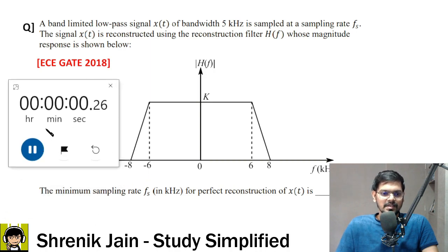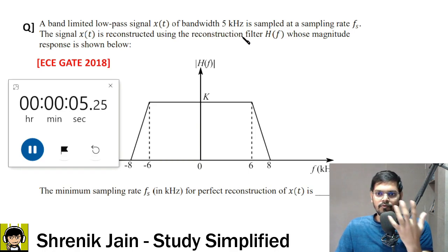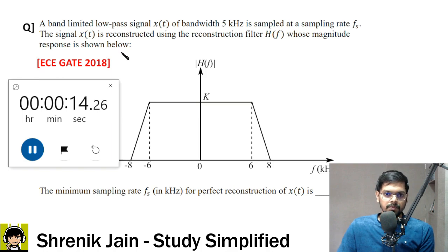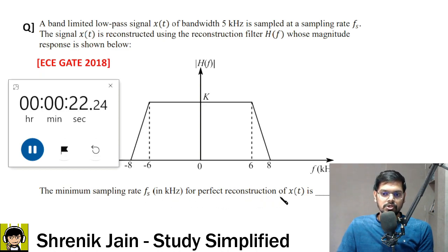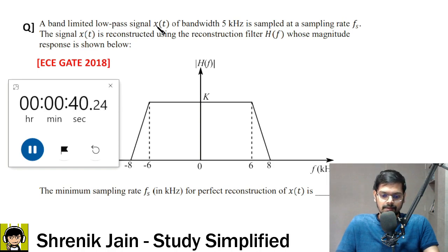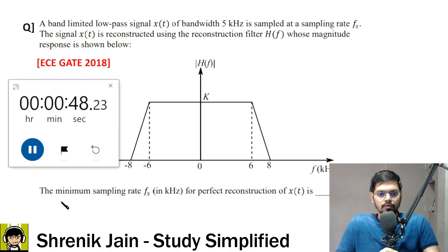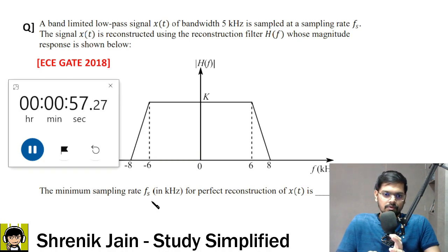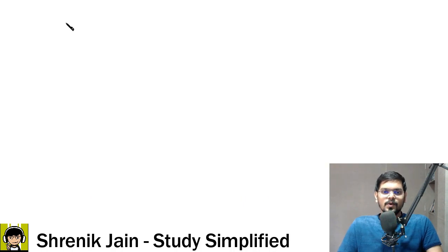The third question: a band-limited low-pass signal x(t) with bandwidth 5 kHz is sampled at sampling rate fs. The signal is reconstructed using a reconstruction filter h(f) whose magnitude response is shown. The minimum sampling rate fs in kHz for perfect reconstruction of x(t) is dash. This question is not tough — it can be solved in about one minute using a two-step process.